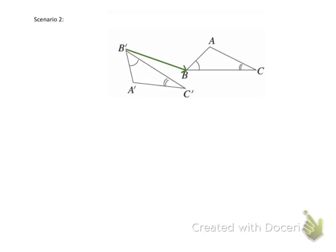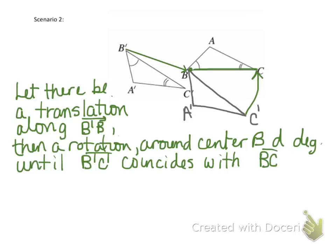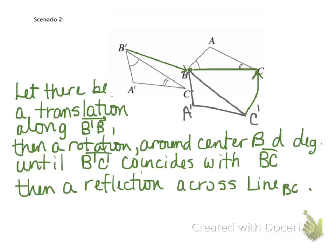For scenario 2, I again start by mapping B' to B with a translation along B'B, moving the triangle down into position. This looks like exercise 3, so I rotate around center B until BC and B'C' match up, then reflect across the line containing segment BC. The full description: translation along B'B, rotation around center B D degrees until B'C' coincides with BC, then reflection across line BC.